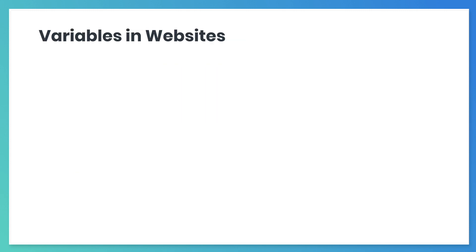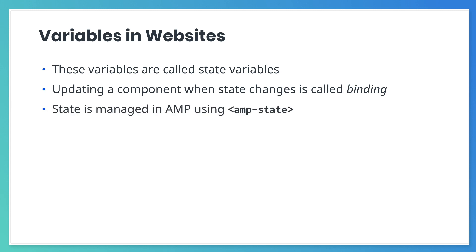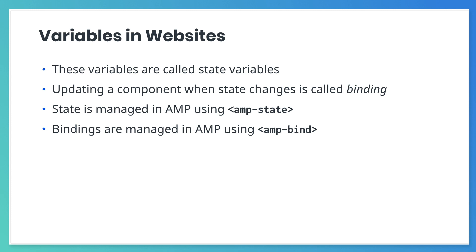The types of variables we just discussed are called state variables. Setting up a component so that it changes when the value of a state variable is changed is called binding. In the following sections, we're going to learn how to create state variables and set up bindings on our components using AMP. State variables are managed in AMP using the AMP state component, and bindings are managed in AMP using the AMP bind component.